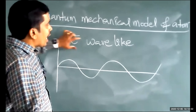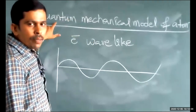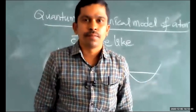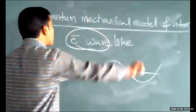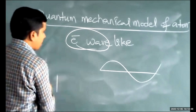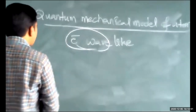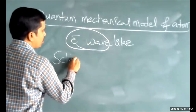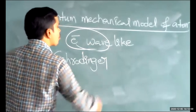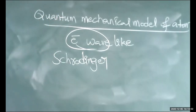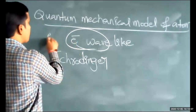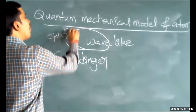Electrons are considered as wave-like according to the quantum mechanical model. For the electron wave, we need to write an equation. The equation was given by the scientist Erwin Schrödinger, who gave the equation of the electron wave.